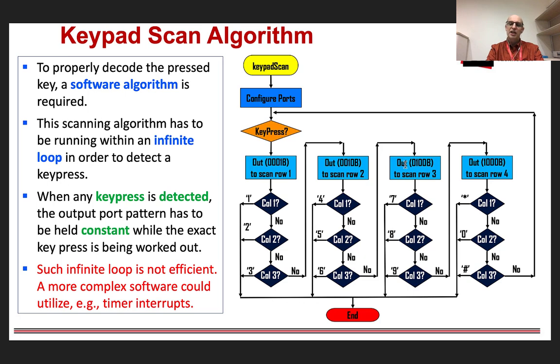If not, then we scan row 3, we're outputting 0, 1, 0, 0, and we check again. And then we scan row 4 by outputting 1, 0, 0, 0, and we check again. And by doing this repeatedly in an infinite loop, we can detect when somebody presses a button.